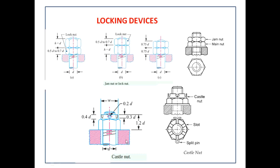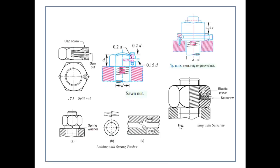The castle nut has a groove at the end and requires a hole in the bolt. Based on the accuracy of assembly, when the groove and hole align in one direction, a split pin can be inserted through the castle nut groove and bolt hole to lock the movement of the castle nut.